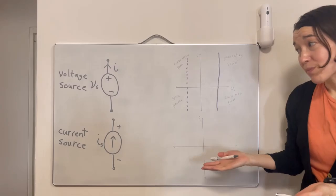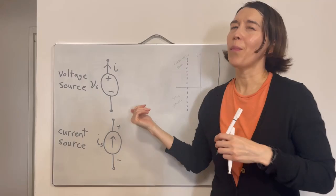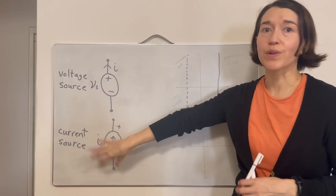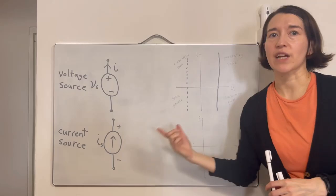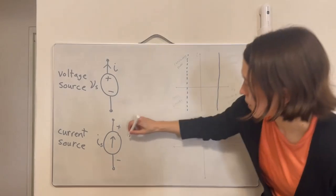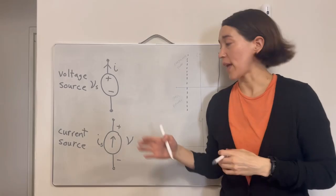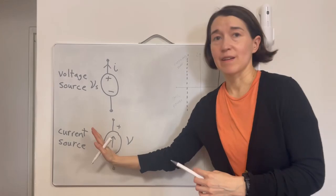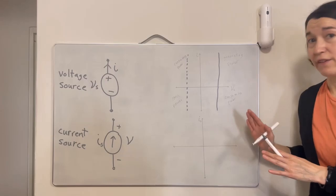We can do the exact same thing with the current source. In circuits, we almost always have a dual problem, so the voltage source has a dual symbol — here it's a current source. We have a set current Is, and we also need to define the voltage across it, which we'll call V. This current source will generate any current that we set, and we can represent that on the IV curve.